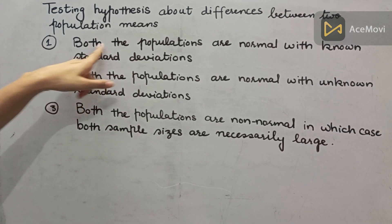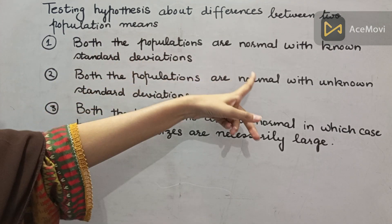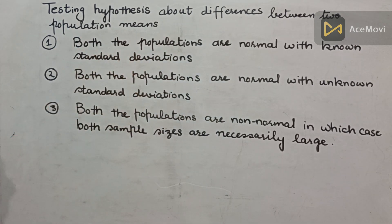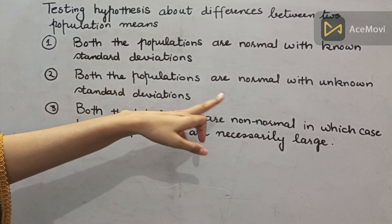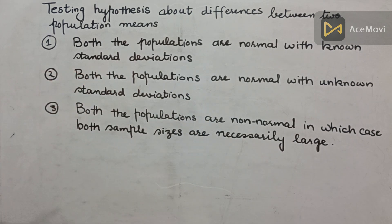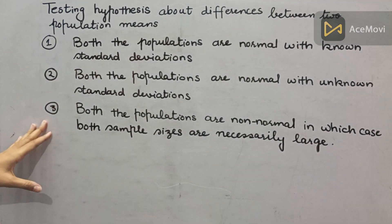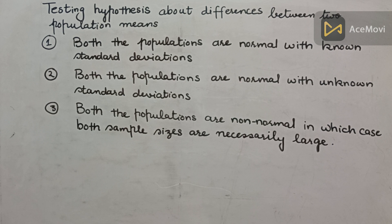The first case is that both populations are normal with known standard deviation. If we have two normal populations and the standard deviation is known, we will use the first case. The second case is that both populations are normal but the standard deviation is unknown. The third case is that both populations are non-normal, but the sample size will be large.